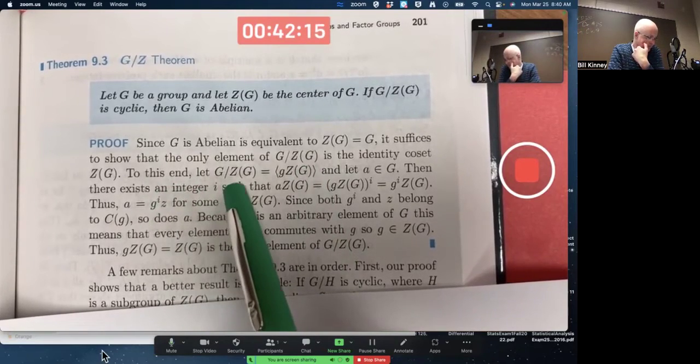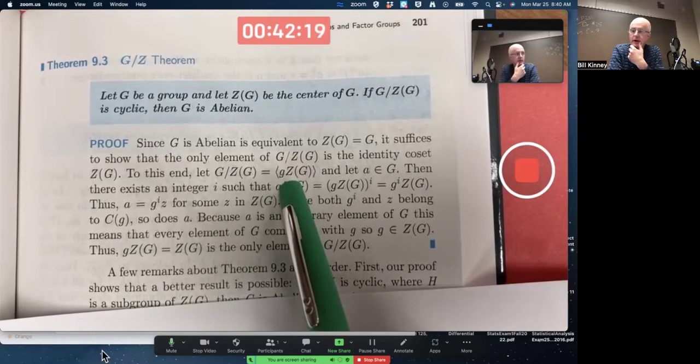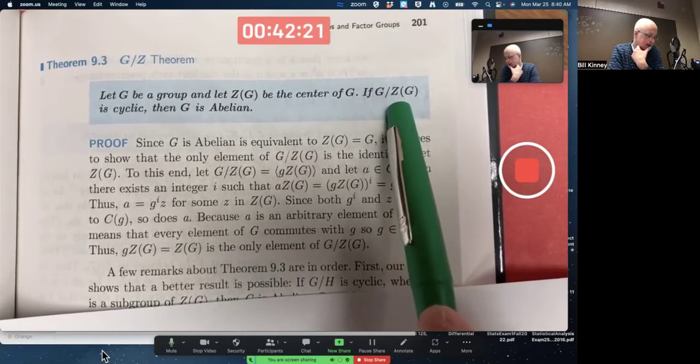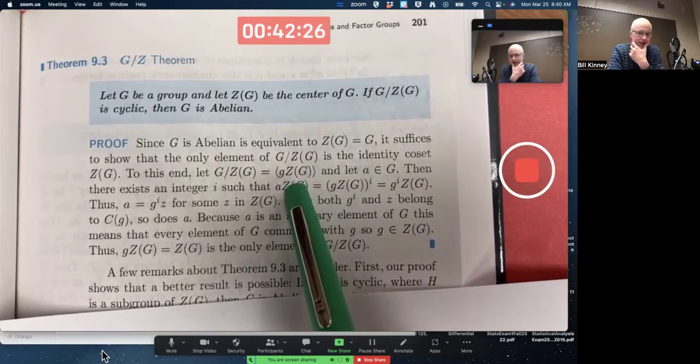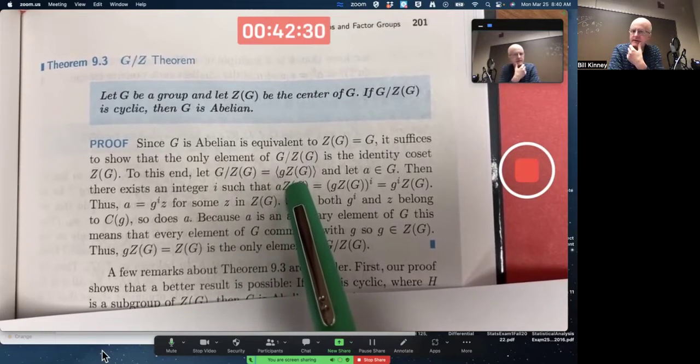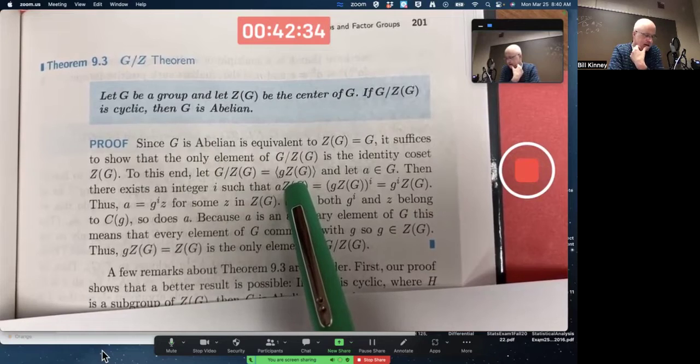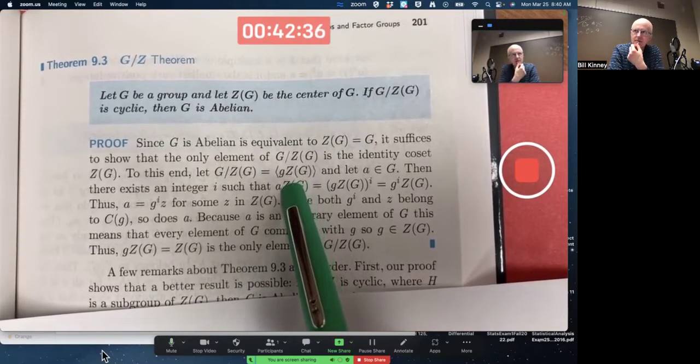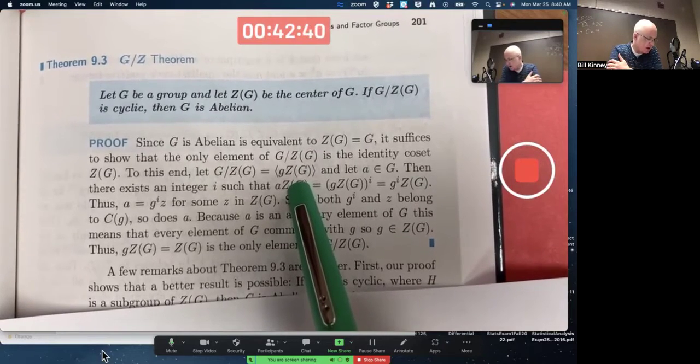Toward this end, assume that this thing right here is a generator. We are assuming this factor group is cyclic, therefore it's got to have some generator. Some coset has got to generate this entire factor group, meaning the factor group is all powers of this particular coset. Don't misunderstand this notation. Make sure you understand it. Z of G is the center of G. It's a subgroup of G, a normal subgroup.